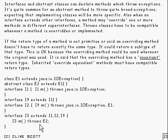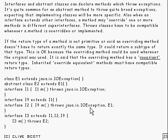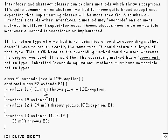Then it checks the throws clause and makes sure that E2 is a subclass of one of those two. And it is — in fact, E2 is a subclass of both of them. It also checks that E2 is a subclass of IOException, which of course it is, because E1 extends IOException and E2 extends E1. So that's fine — everything works and compiles.